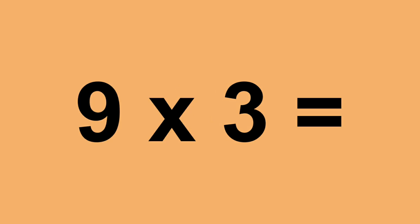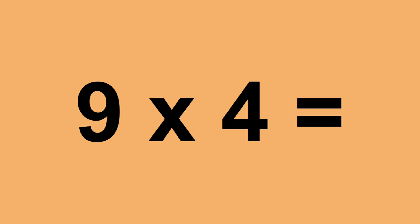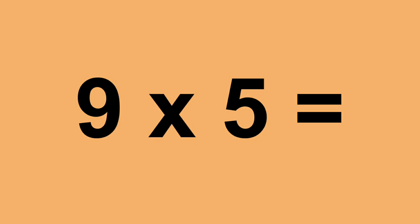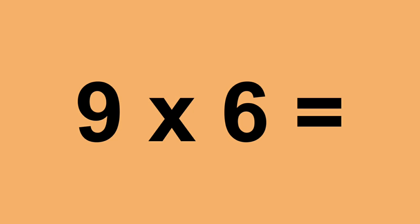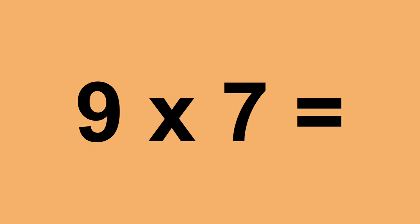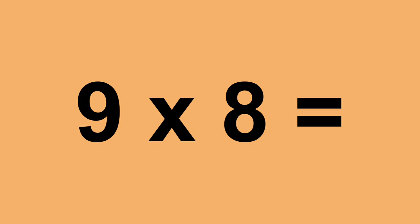Nine times zero equals zero. Nine times one equals nine. Nine times two equals eighteen. Nine times three equals twenty-seven. Nine times four equals thirty-six. Nine times five equals forty-five. Nine times six equals fifty-four. Nine times seven equals sixty-three. Nine times eight equals seventy-two.